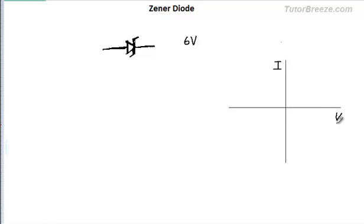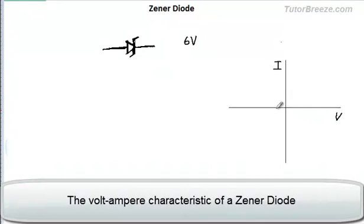Now, first of all, let's look at the VI characteristics of a Zener diode and for that we will first look at the forward bias and then we will look at the reverse bias. And the Zener diode actually operates in this reverse bias region.